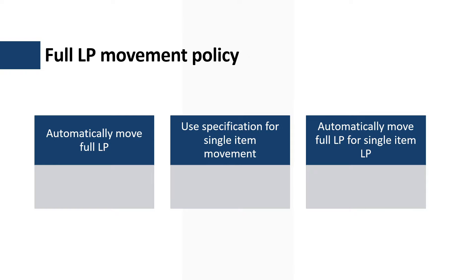The first policy is called Automatically Move Full License Plate. By using this policy, the system assumes that all warehouse movements are for the entire license plate, hence the warehouse worker is never prompted to scan the items. This option works well for entire pallet movements. The second option is called Use Specification for Single Item Movement. In this flow, the warehouse worker is prompted to specify all relevant details such as the pallet quantity before moving the license plate or pallet.